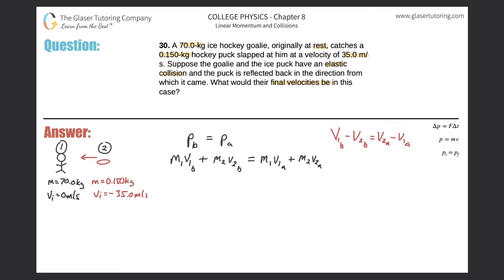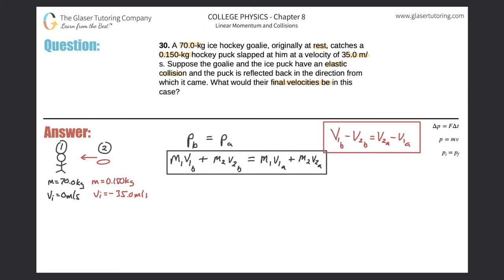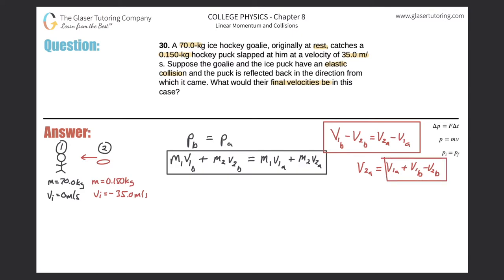We now have two equations and two unknowns, so this is a system of equations problem. We solve one equation for one variable and plug it into the other. I'll solve the relative velocity equation for V2A. Adding V1A to both sides gives: V2A equals V1A plus V1B minus V2B. Now I take this expression for V2A and substitute it into the momentum equation.